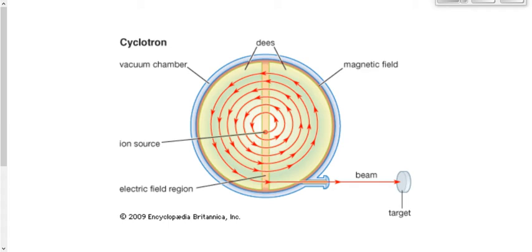This cyclotron consists of two Ds, a forward D and a backward D. These two Ds both have magnetic fields inside, but in between these Ds, there's going to be an electric field.